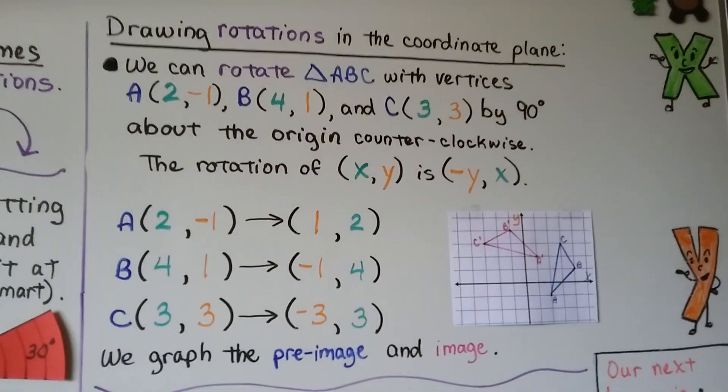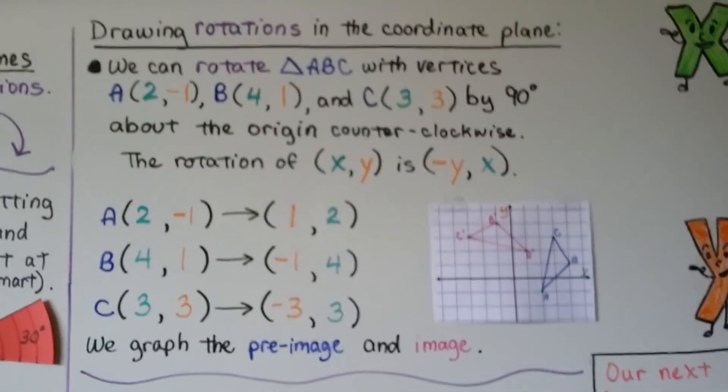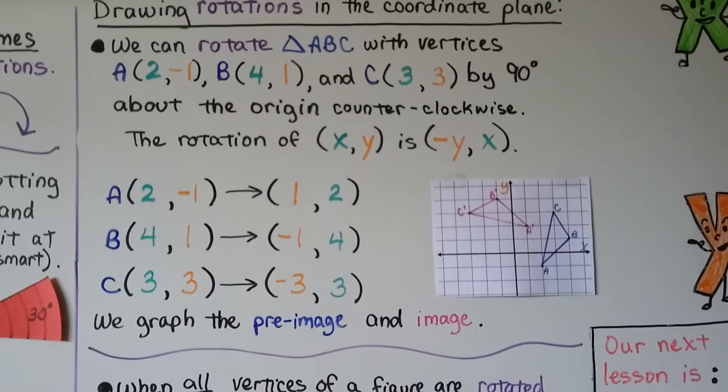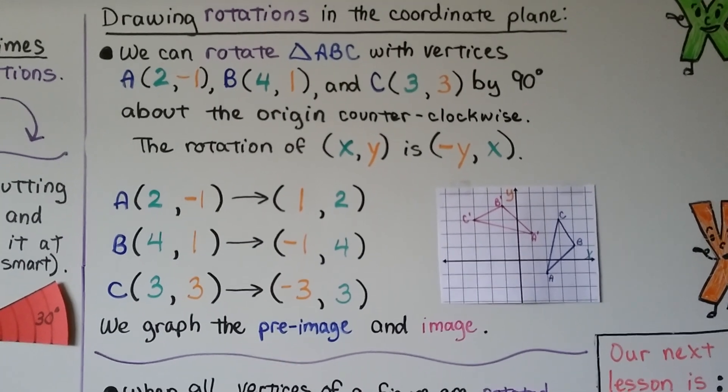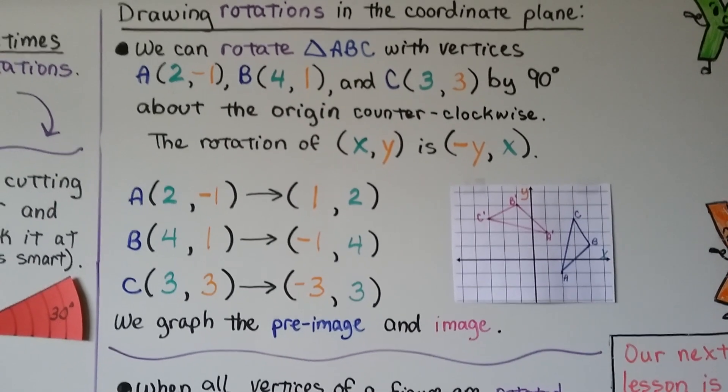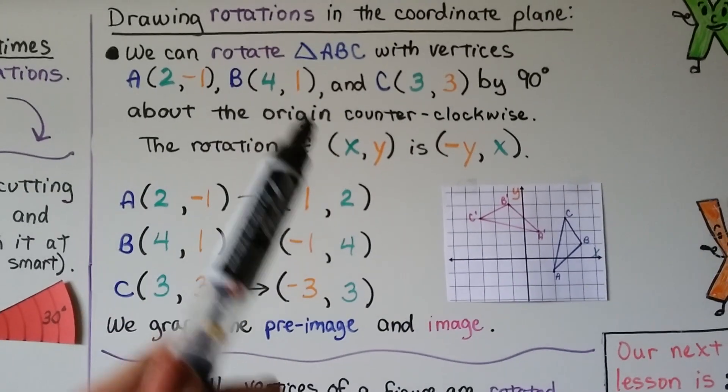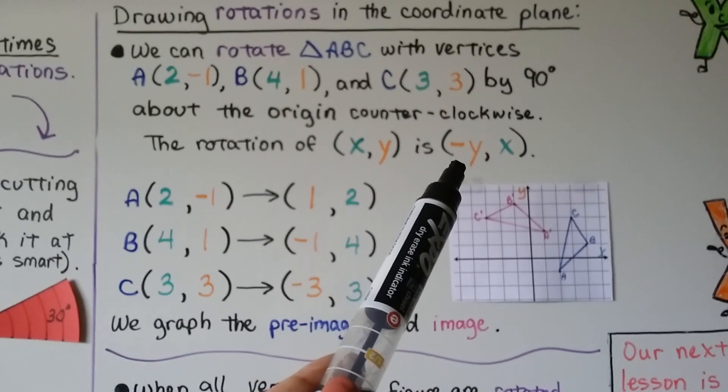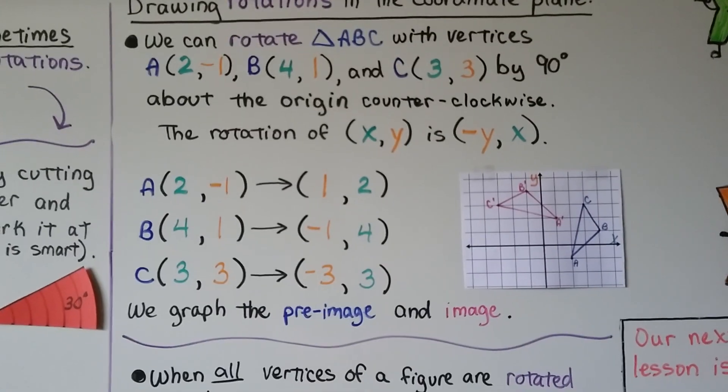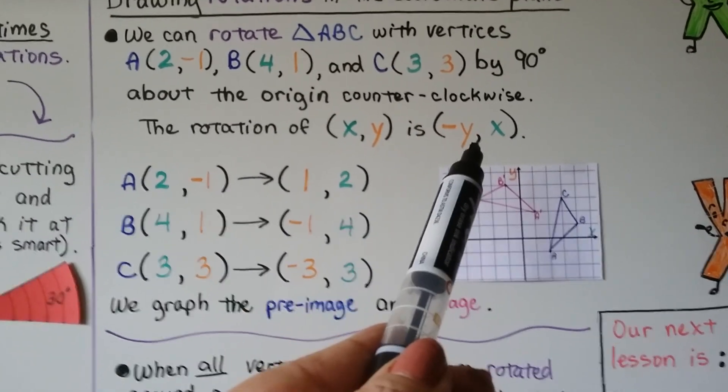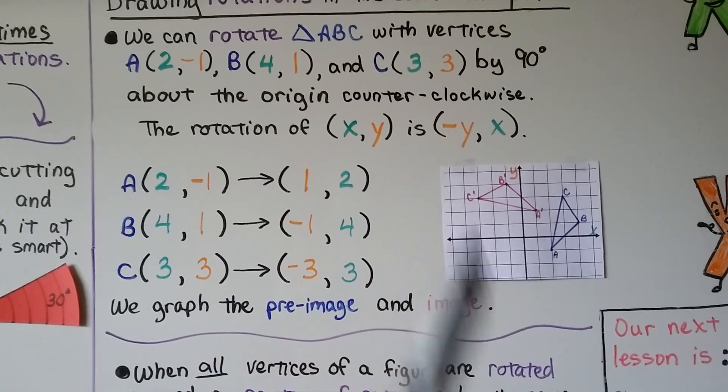In drawing rotations in the coordinate plane, we can rotate triangle ABC, this blue one, with the vertices A, B, and C by 90 degrees about the origin counterclockwise. And the rotation is going to go from the xy values to the inverse of y, x. So we're going to swap their places for the rotation and we're going to make the y value the inverse.